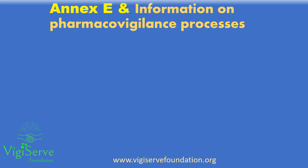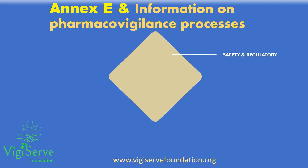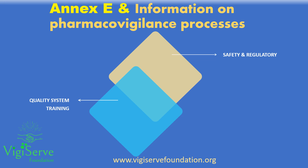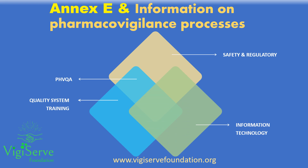Annex E pertains to operational processes, that includes QMS documents such as standard operating procedures or working practices. The MAH is expected to provide a list of SOPs pertaining to pharmacovigilance systems and safety-related regulatory affairs. Besides, safety interface with the quality department also needs to be considered. We need to include the list of SOPs for pharmacovigilance quality assurance. Apart from these, we also need to include the safety and quality interface with IT, which includes the processes associated with safety systems, the backup activities and the validation-related activities.